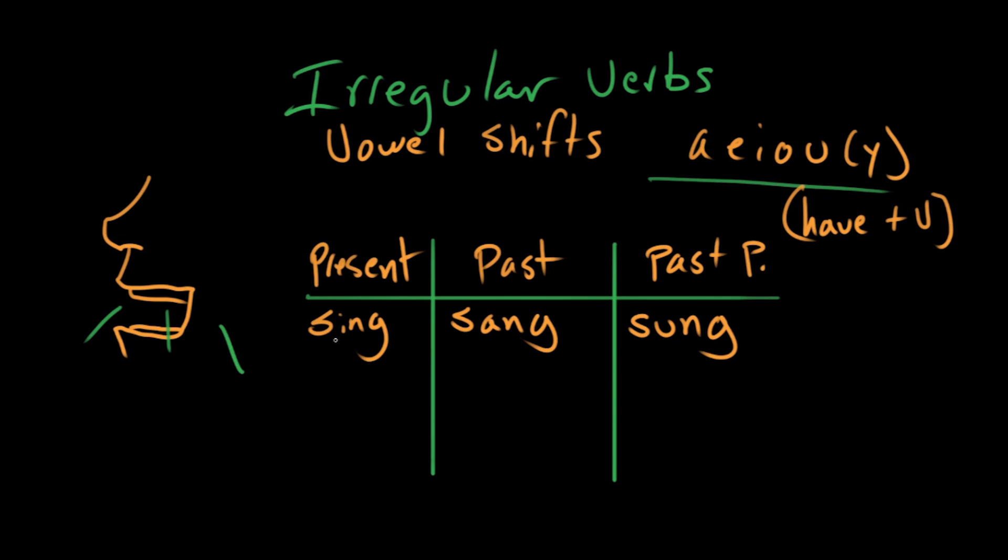because the vowel changes. This vowel sound, ih, eh, uh, actually bounces along your mouth. It goes from front to middle to back as you go further and further back in time. Which I think is really cool. I, uh, ah.